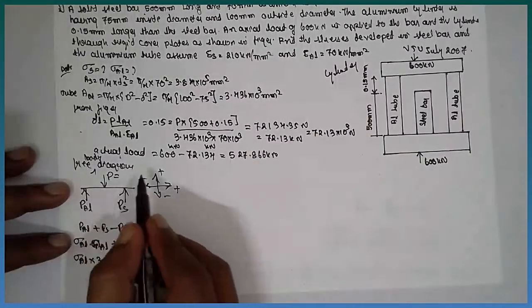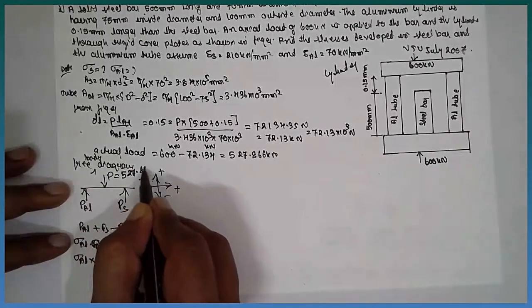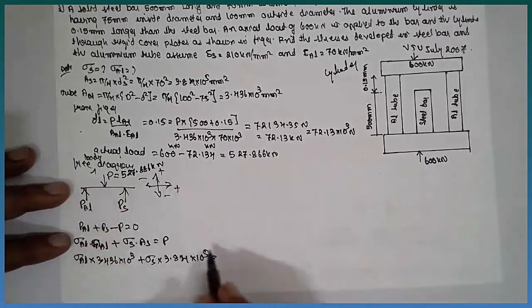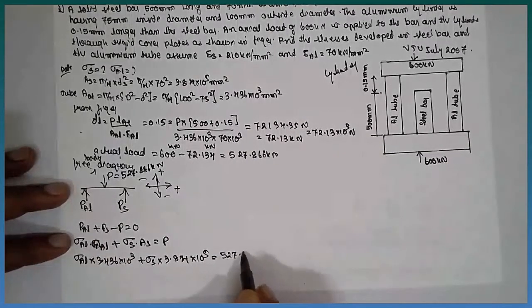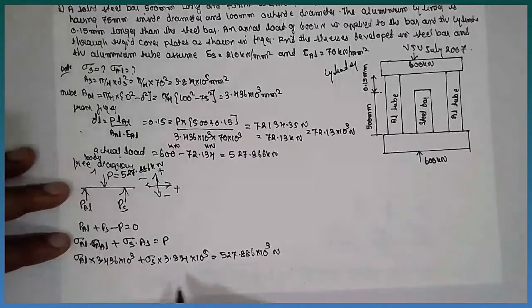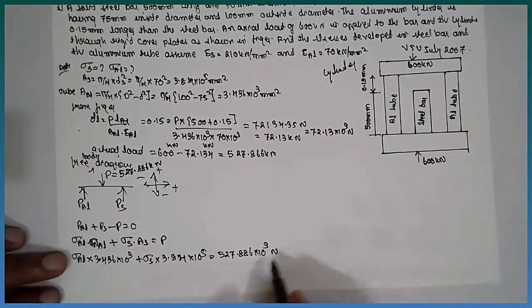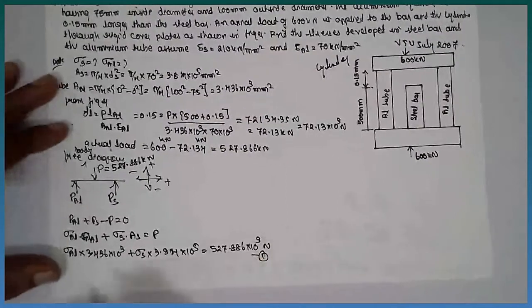What is P? P is this value, 527.886 kilonewton, 527.886 into 10 raise to 3 in terms of newton. This is equation one.